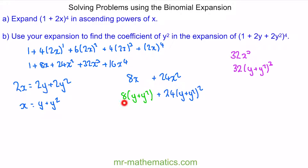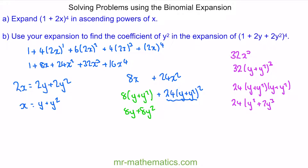Expanding 8(y + y²) gives 8y + 8y². Expanding 24(y + y²)² gives 24 lots of y² + 2y³ + y⁴, and we're only interested in the y squared term, which is 24y². We're not interested in the 8y term. So the coefficient of y squared comes from 8 and 24, giving 32y squared.